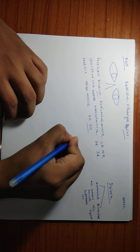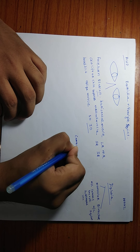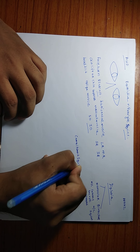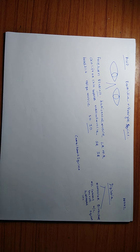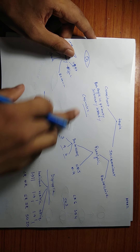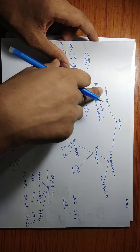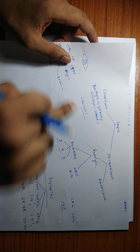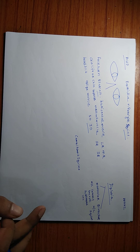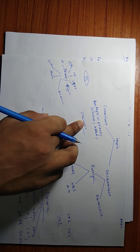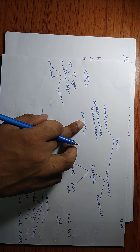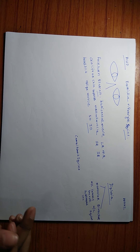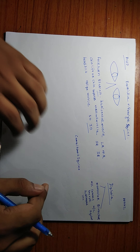Now we will go to an important topic: comitant squint. As we discussed previously, tropia is divided into comitant and incomitant. Comitant means both the angles in primary, secondary, and tertiary positions are the same. In comitant squint, most of the time we don't need to treat it functionally — there is no functional problem, only a cosmetic issue.